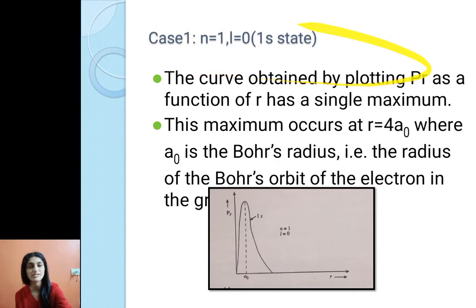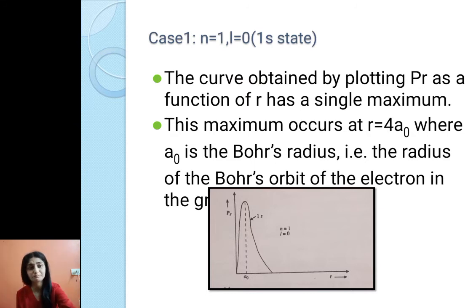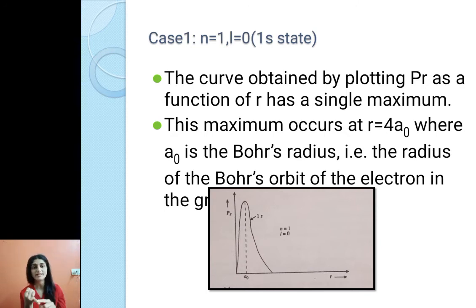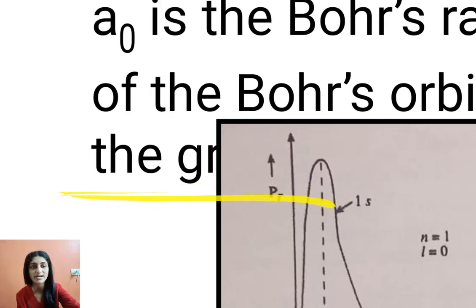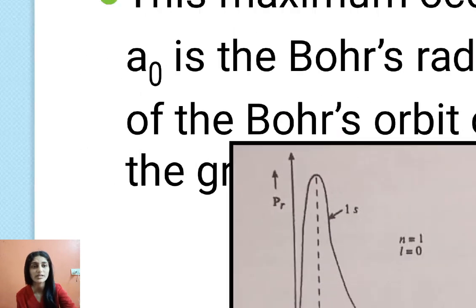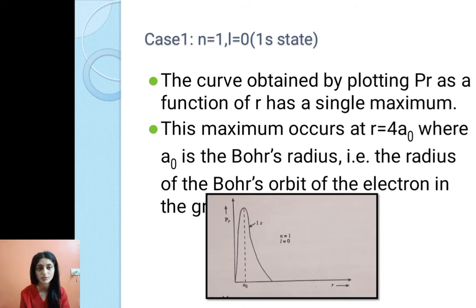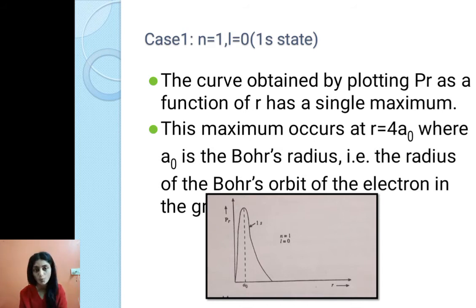For N = 1 and L = 0, that is the 1s state: 1 represents N, and S represents L = 0. When we plot P(r) as a function of R, we get a single maximum at R = A₀, where A₀ is the Bohr radius — the radius of the Bohr orbit of the electron in the ground state.